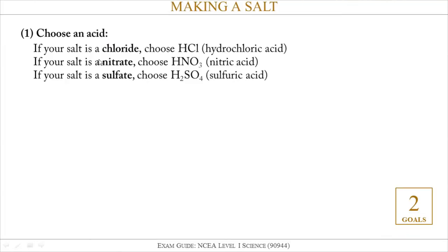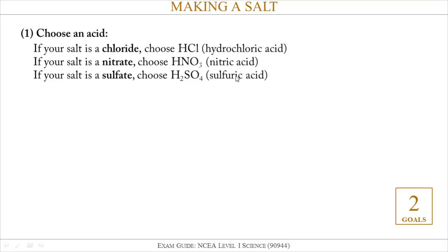If your salt is a chloride you'll always use hydrochloric acid. If your salt is a nitrate you'll always use nitric acid. If your salt is a sulfate you'll always use sulfuric acid. So if we were making sodium chloride, we would definitely need HCl, hydrochloric acid. If we were making magnesium nitrate, we would definitely need nitric acid.